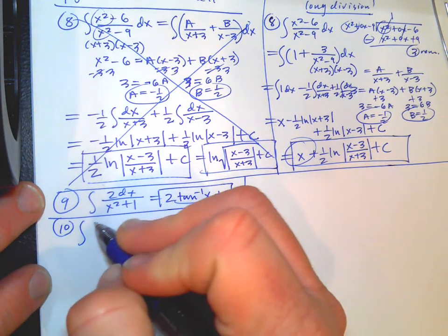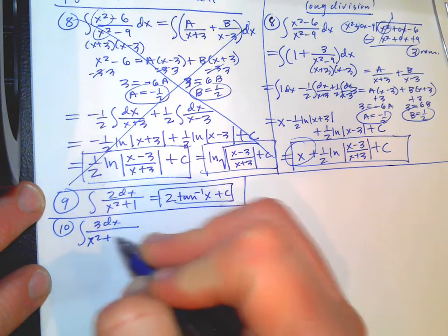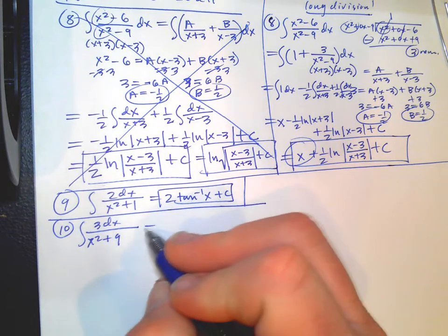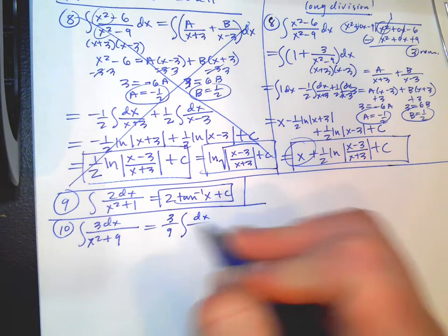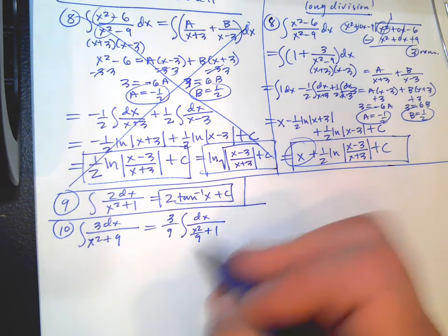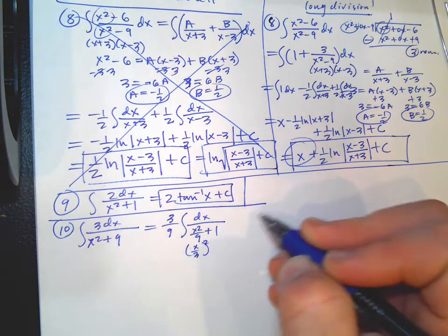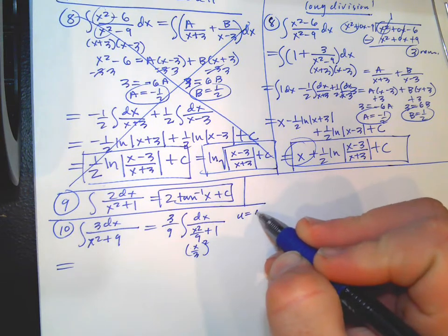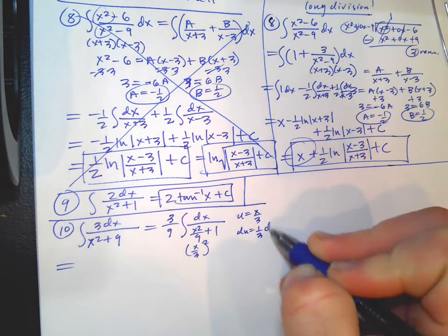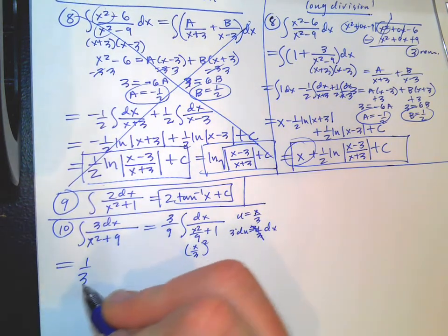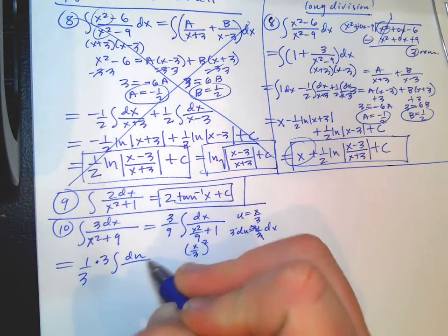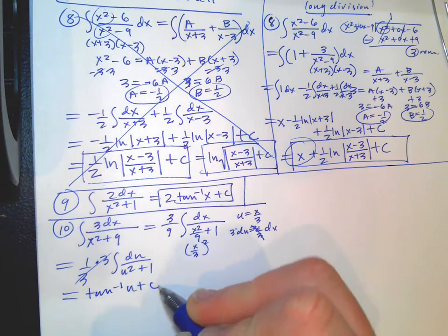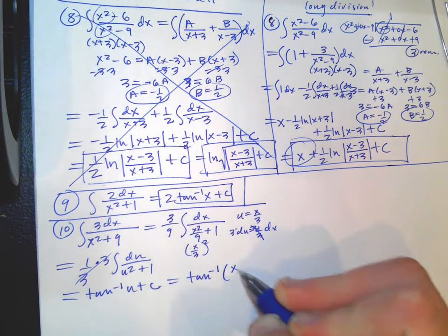Problem 10: integral of 3 dx over X squared plus 9. U-substitution doesn't work here, but this is inverse tangent. We need to factor out a 9, and we can bring the 3 out at the same time, giving X squared over 9 plus 1, which is (X over 3) squared. Let U equal X over 3, so dU equals one third dx. We end up with inverse tangent of U plus C, which in terms of the original variable is inverse tangent of X over 3 plus C.